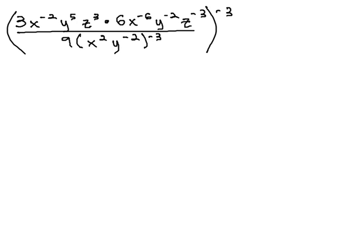In this video, we're going to simplify the expression 3x to the negative 2, y to the 5th, z cubed, times 6x to the negative 6th, y to the negative 2nd, z to the negative 3, all over 9 times the quantity of x squared, y to the negative 2, to the negative 3. And then, the entire expression is raised to the negative 3 power.